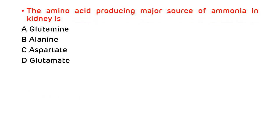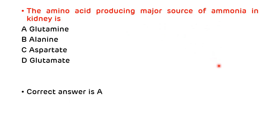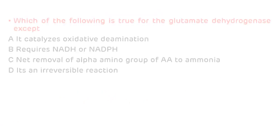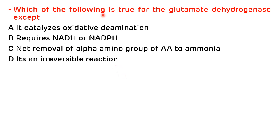Second question: the amino acid producing the major source of ammonia in the kidney is — a) glutamine, b) alanine, c) aspartate, d) glutamate. The correct answer is A — glutamine is the amino acid which produces the major source of ammonia in the kidney, and it is also the major transport form of ammonia.